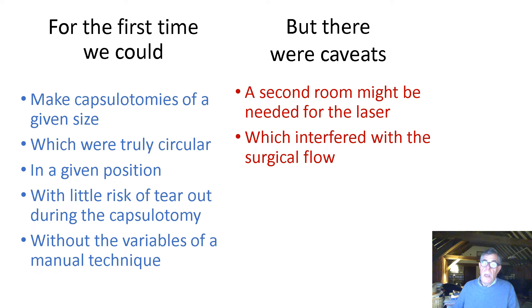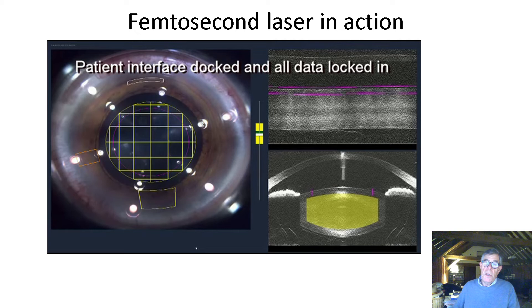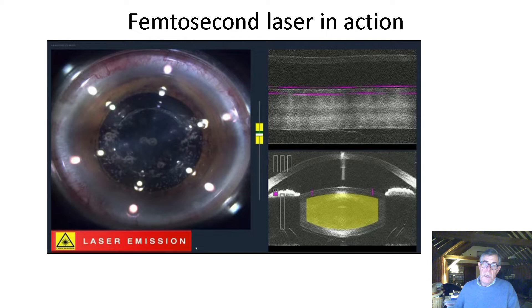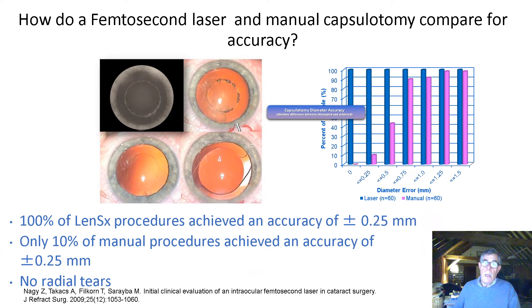But there were caveats. A second room might be needed for the laser, which would interfere with surgical flow. The cost of the device was high, as were the running costs, and the advantages really needed to be shown. Here we can see the femtosecond laser in action: the capsulotomy is being created, the laser emission, treatment of the nucleus, and ultimately the incisions. It looks amazing, but the machines cost significantly in terms of capital and running costs.